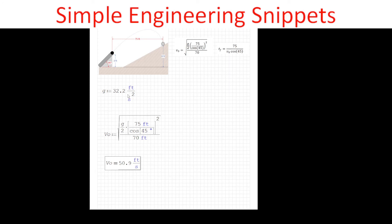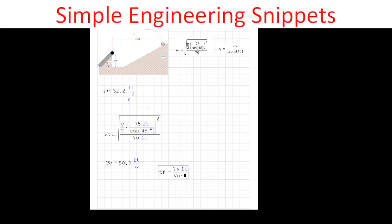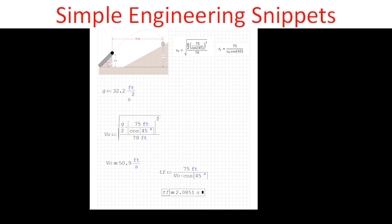So 50.9 feet per second is the magnitude of the velocity as the projectile exits the tube. Now let's determine our impact time: TF equals 75 feet divided by V-naught times cosine 45 degrees. Letting SMath do the calculation, we get 2.081 seconds, or approximately 2.1 seconds. That's how you work a problem like this. I hope you found this useful — please like and subscribe, and have a great day.